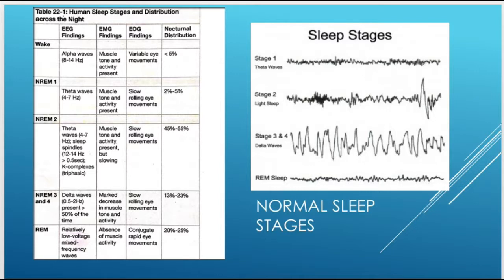The human sleep stages distribution table gives a breakdown of the various recording devices used in polysomnography. In the wake state, you see alpha waves at 8 to 14 hertz, the EMG shows muscle tone and activity, and the extraocular muscles show variable eye movements — this accounts for about 5% of nocturnal distribution. Non-REM stage 1 shows theta waves at 4 to 7 hertz, muscle tone and activity present, slow rolling eye movements, and approximately 2 to 5% of nocturnal distribution.